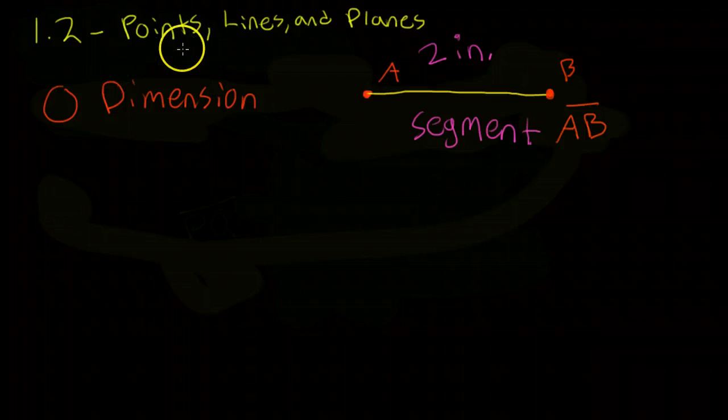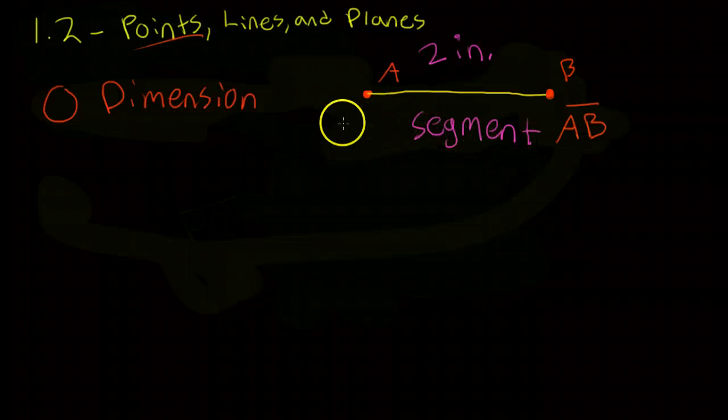Now, if we look at, so we've analyzed points and we've looked at one type of line. This is called a line segment.